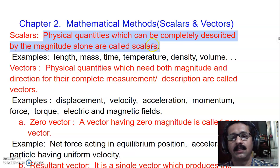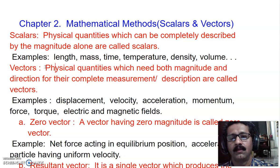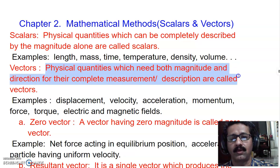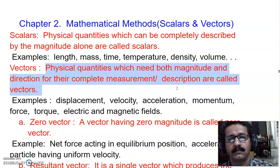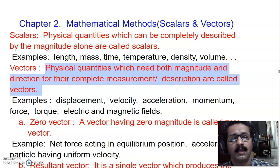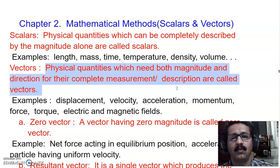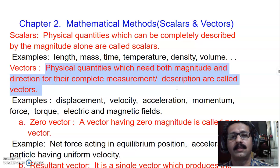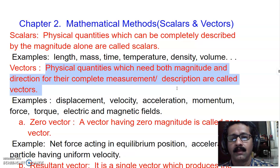Vector physical quantities are all those physical quantities which need both magnitude and direction for their complete measurement or description. Now, which physical quantities are actually vector physical quantities? The first chapter of physics makes you aware of the different physical quantities, at least a few of them, including those which need both magnitude and direction.